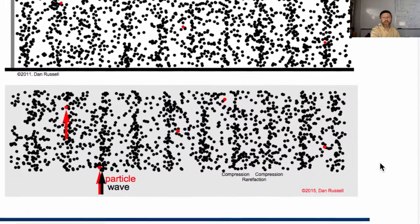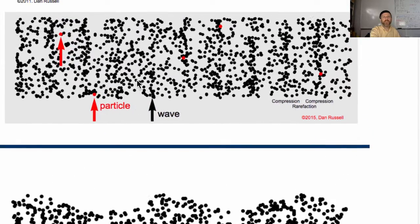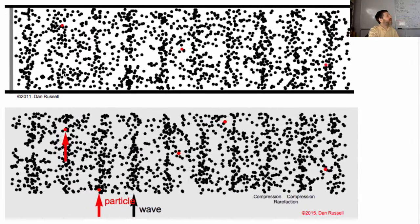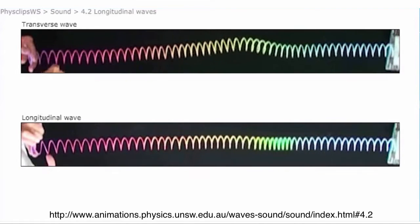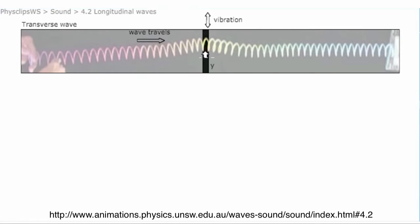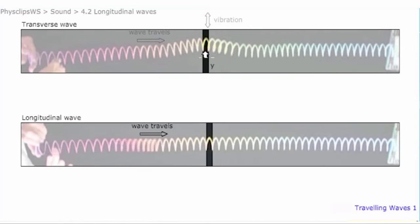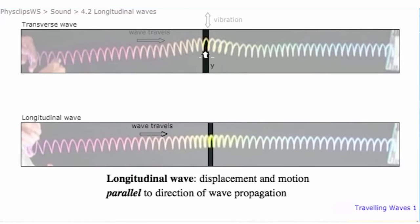Here's another example of a transverse wave: the displacement is up and down, but the wave travels to the right. For a longitudinal wave, the displacement goes right and left and the wave also travels to the right — along the same direction. Here is a comparison of transverse and longitudinal waves on a real slinky from the Fizz Clips website. For a transverse wave, displacement Y is mainly at right angles to X, the direction of propagation. For a longitudinal wave, displacement Y is in the X direction — parallel to the direction of wave propagation.